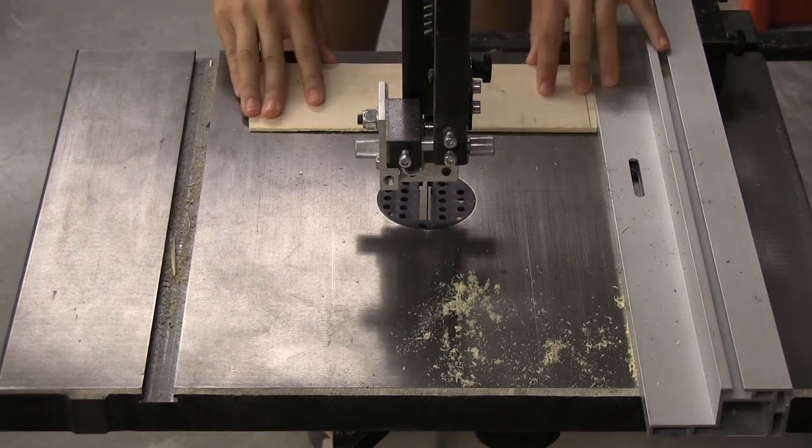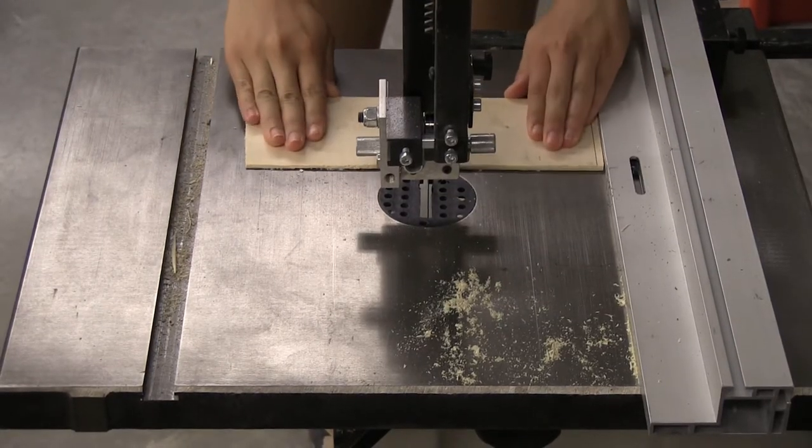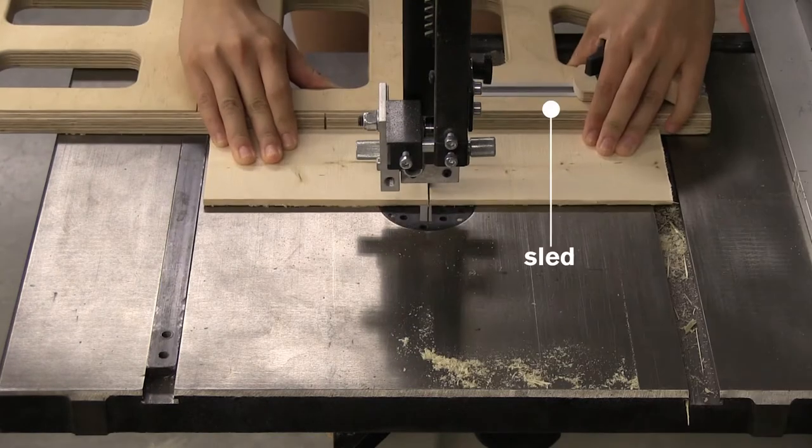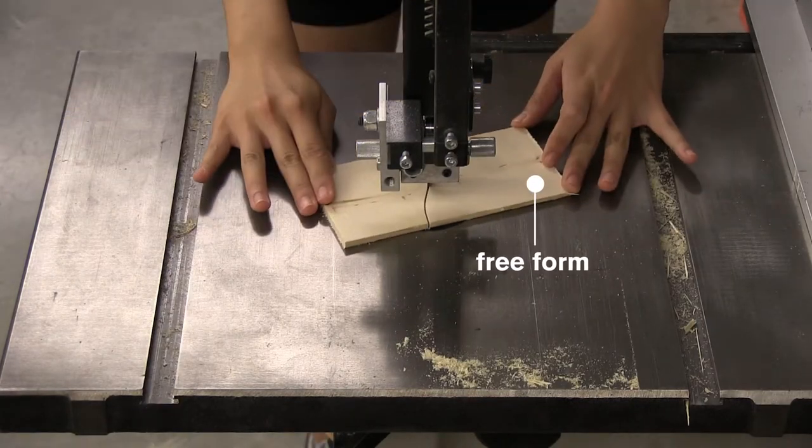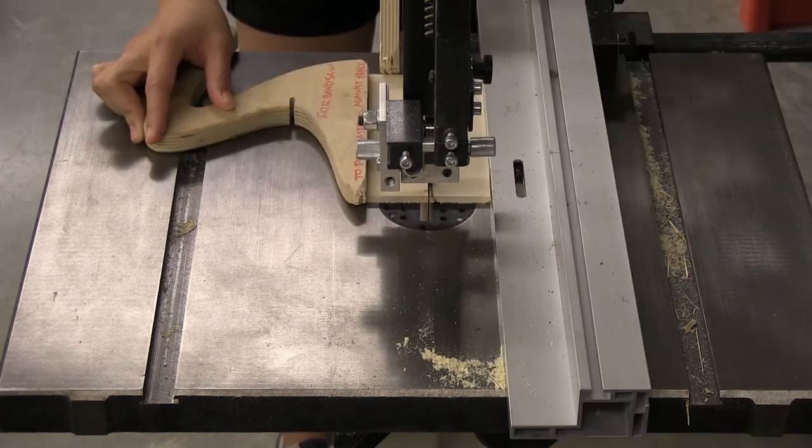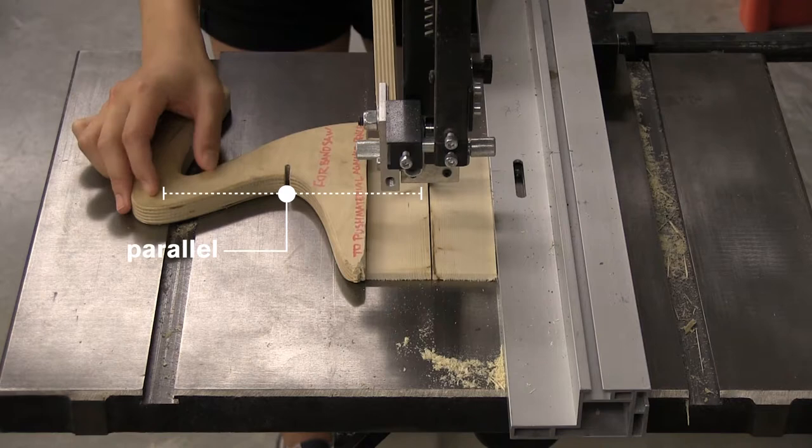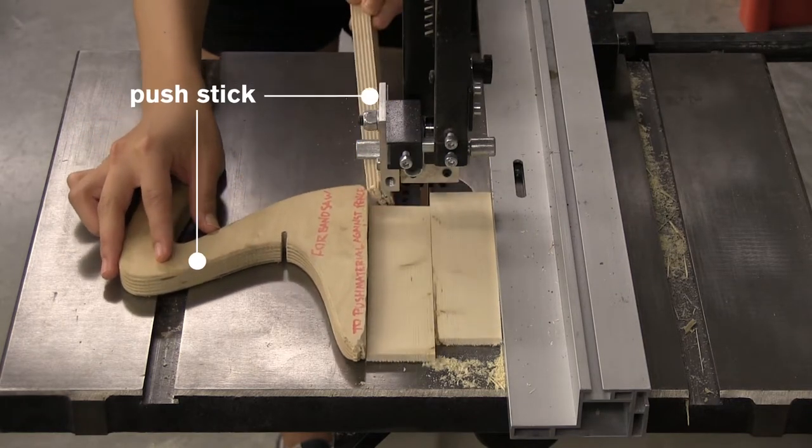You should never push your hands directly toward the blade when cutting. This is true if you are making cuts with the fence, cuts with the sled, or a free-form cut. Always push your material with your hands moving parallel to the side of the blade. Use push sticks when possible.